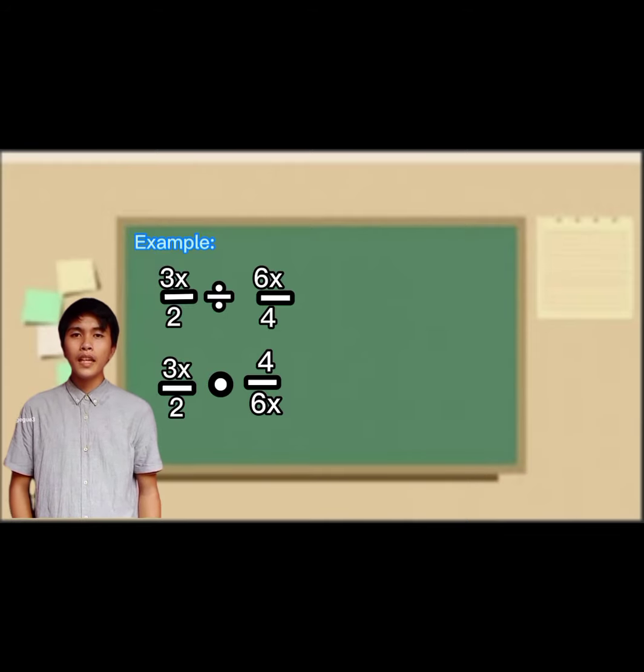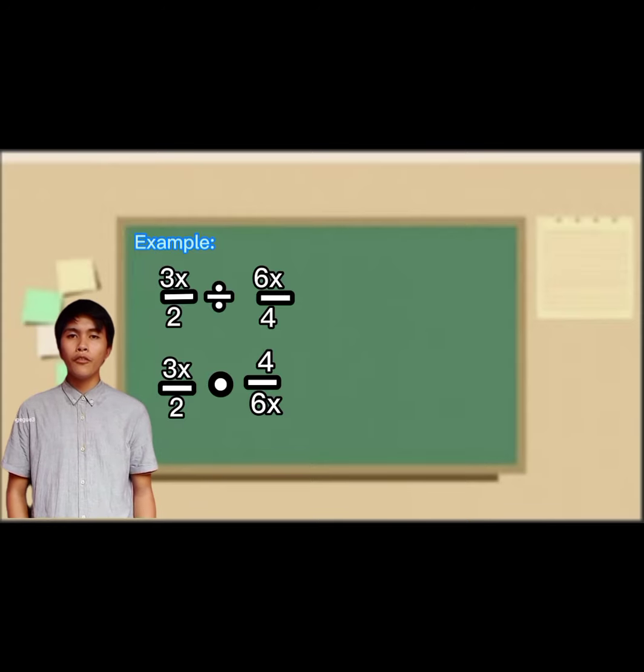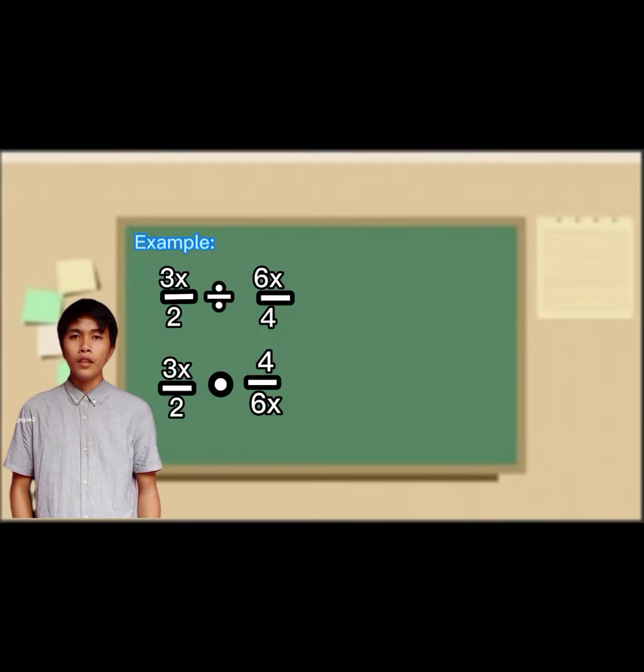Since it is not possible to factorize our given, let's proceed to the fourth step, which is to cancel common factors of the numerator and denominator.